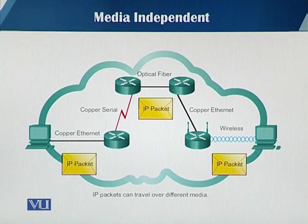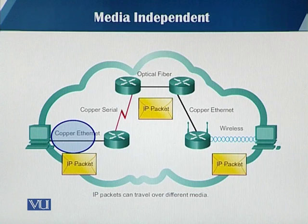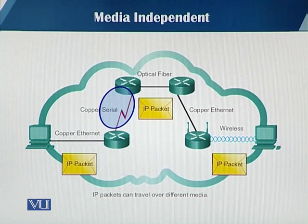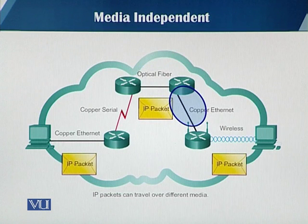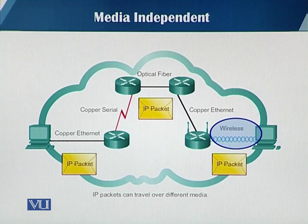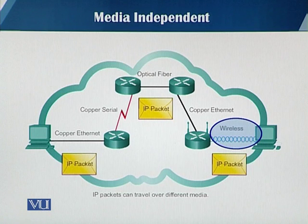For the media independent characteristic of the IP protocol, as you can see on the slide, from the end host to the router, the packet is basically going over copper Ethernet. From the first hop router to the second hop router, it is taking copper serial communication, which is point to point. Between two other routers, they are connected with optical fiber, a different link layer technology. And from another router all the way to the destination host, you have wireless — mostly Wi-Fi link layer technology. No matter what underlying link layer technology you are using, IP is independent of that media or communication technology.